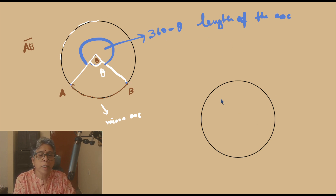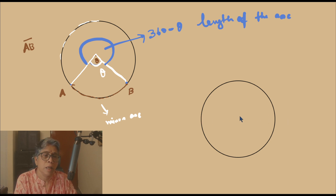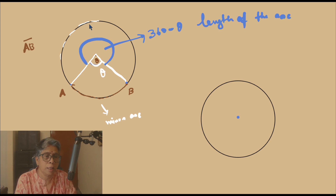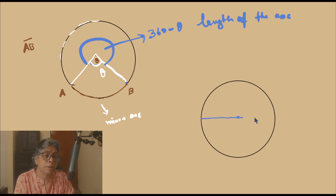Now it comes to this question: what about equal arcs? When will the arcs be equal? When will the minor arc be equal to the major arc? This will happen only when the circle is divided into two equal parts by the diameter.